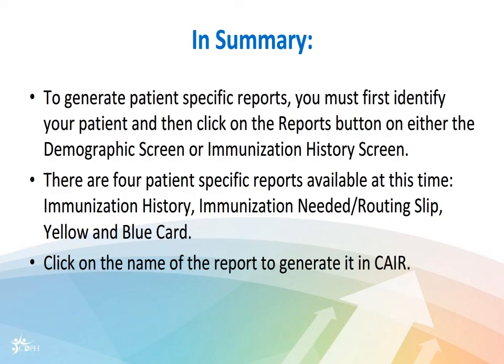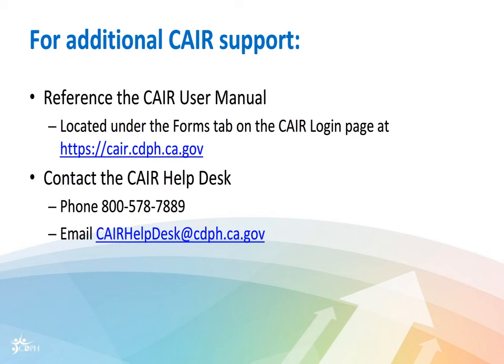In summary, to generate patient-specific reports, you must first identify your patient and then click on the Reports button on either the Demographic screen or the Immunization History screen. There are primarily four patient-specific reports available: Immunization History, Immunization Needed Routing Slip, yellow card, and blue card. Click on the name of the report to generate it in CARE. For additional CARE support, reference the CARE User Manual located under the Forbes tab on the CARE login page, or contact the CARE Help Desk by phone at 800-578-7889 or by email at carehelpdesk@cdph.ca.gov.